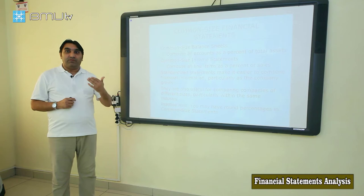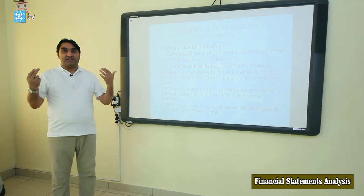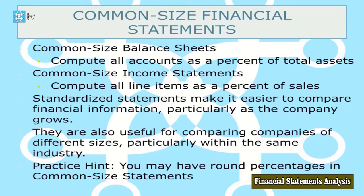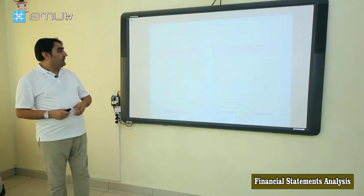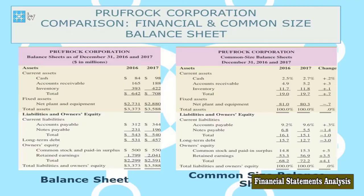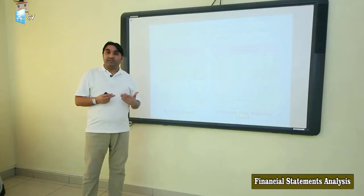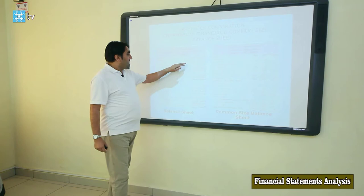That is, we convert the balance sheet, income statement and other statements into common size statements. We start with the common size balance sheet. The common size balance sheet reports all balance sheet items as a percentage of total assets. We have statements here for Profit Corporation, which has assets divided into current assets and fixed assets, with total assets of $3.3 million. To convert this balance sheet into a common size balance sheet — we call it standardizing — we express all assets as a percentage of total assets.